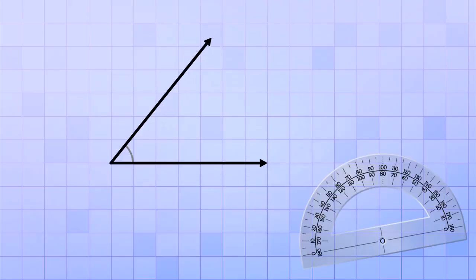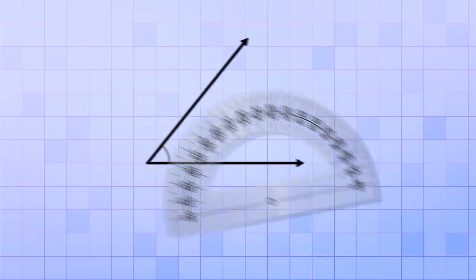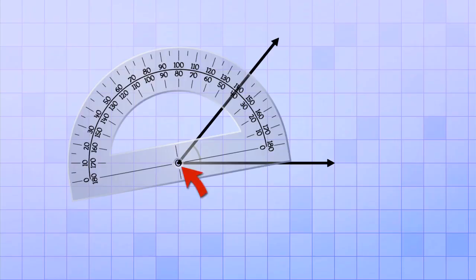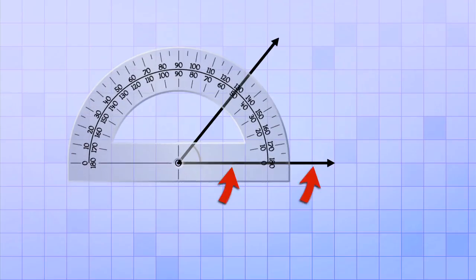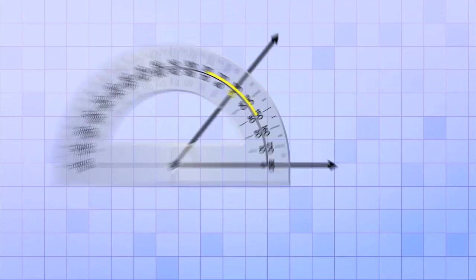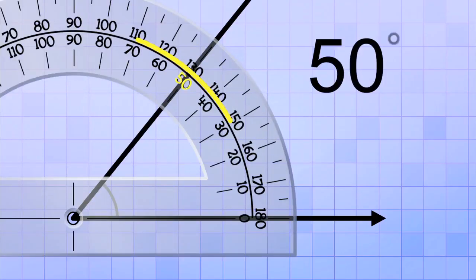So if you're given a mystery angle like this one and you want to measure how many degrees it is, you just put your protractor on top of it so that the axis point lines up with the intersection of your rays, like this. Then you make sure that one of the rays lines up with the straight line on the protractor. And last of all, you look to see where the other ray crosses the curved part and read off what angle measurement it lines up with. As you can see, this angle here is 50 degrees.